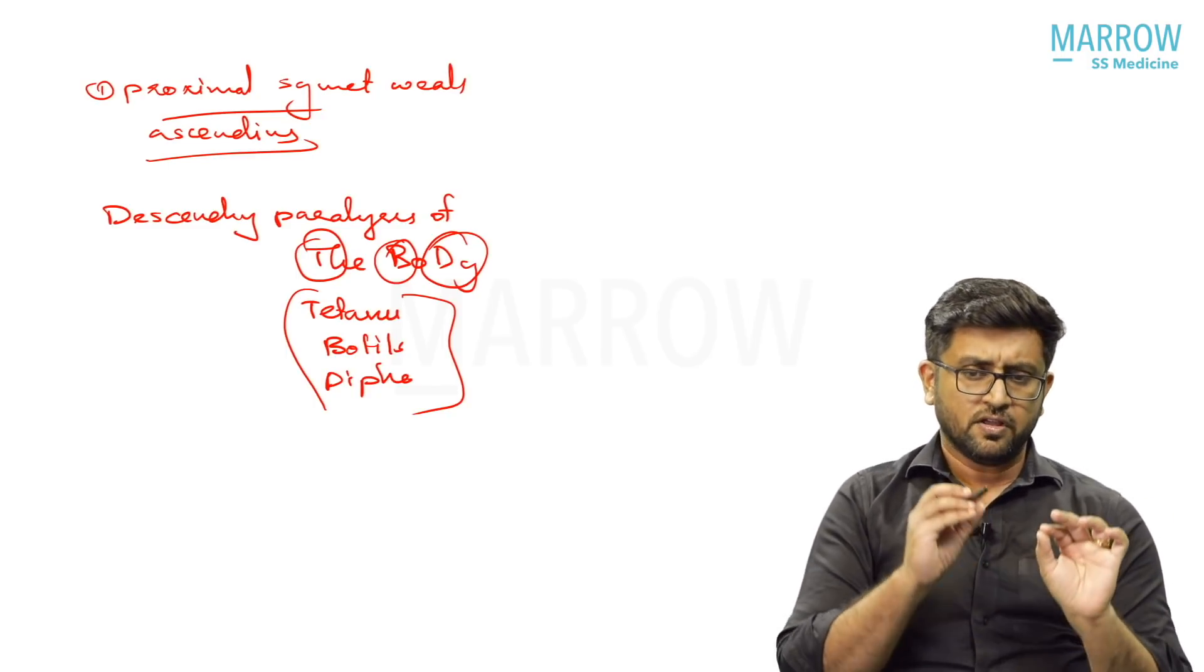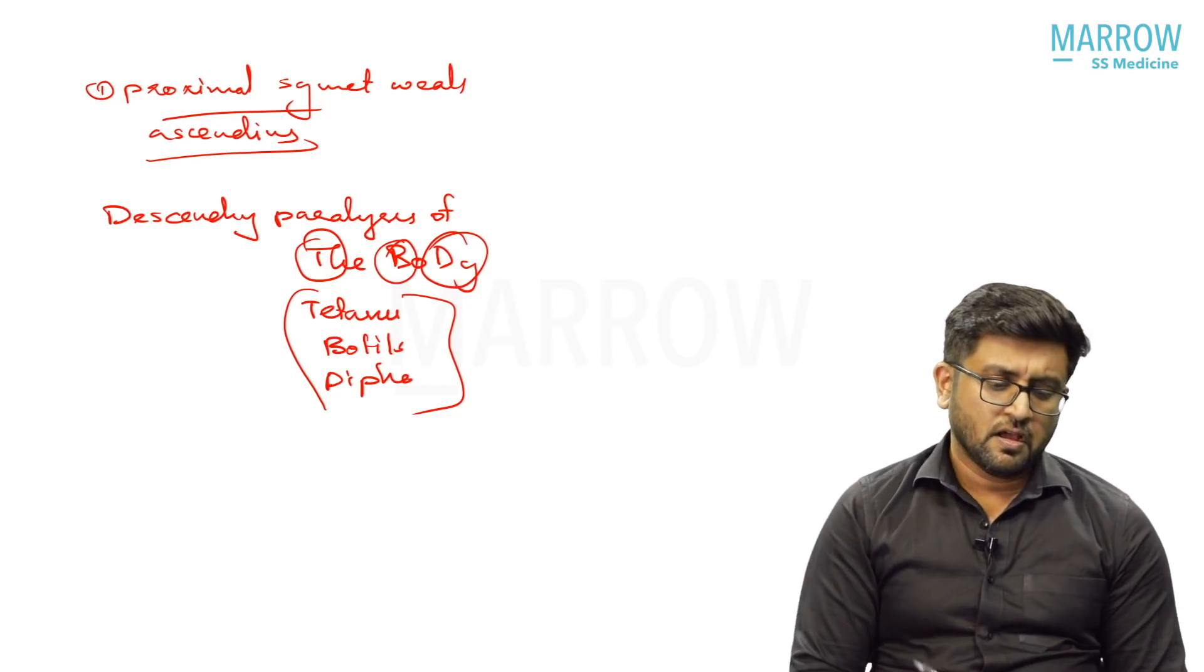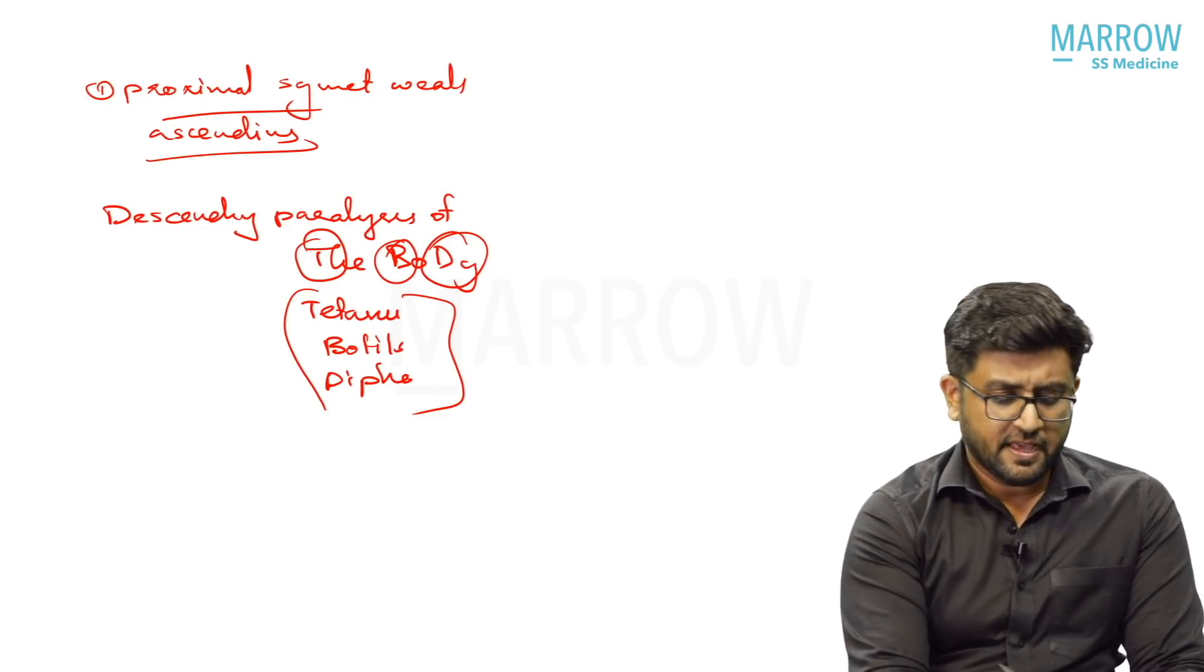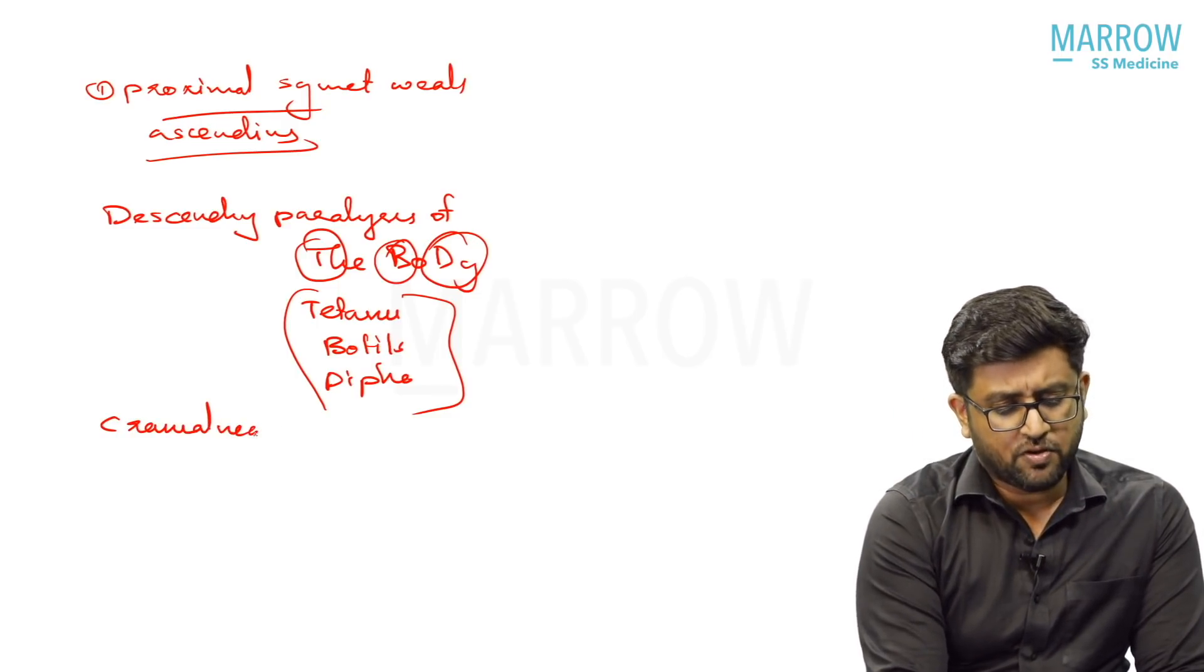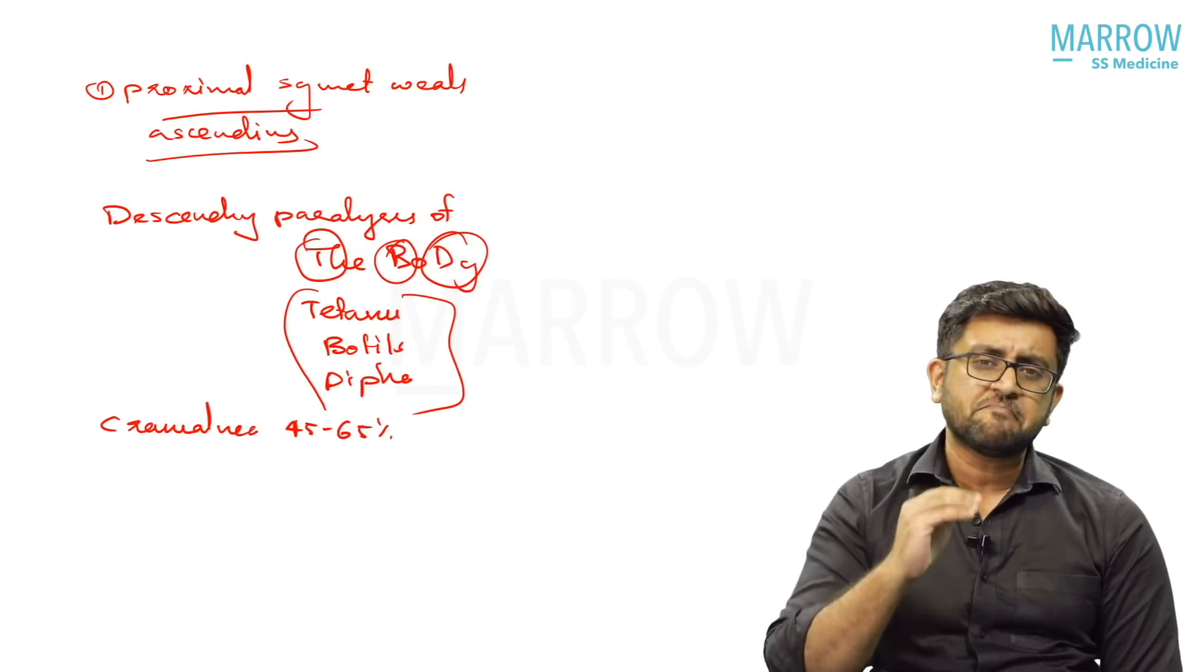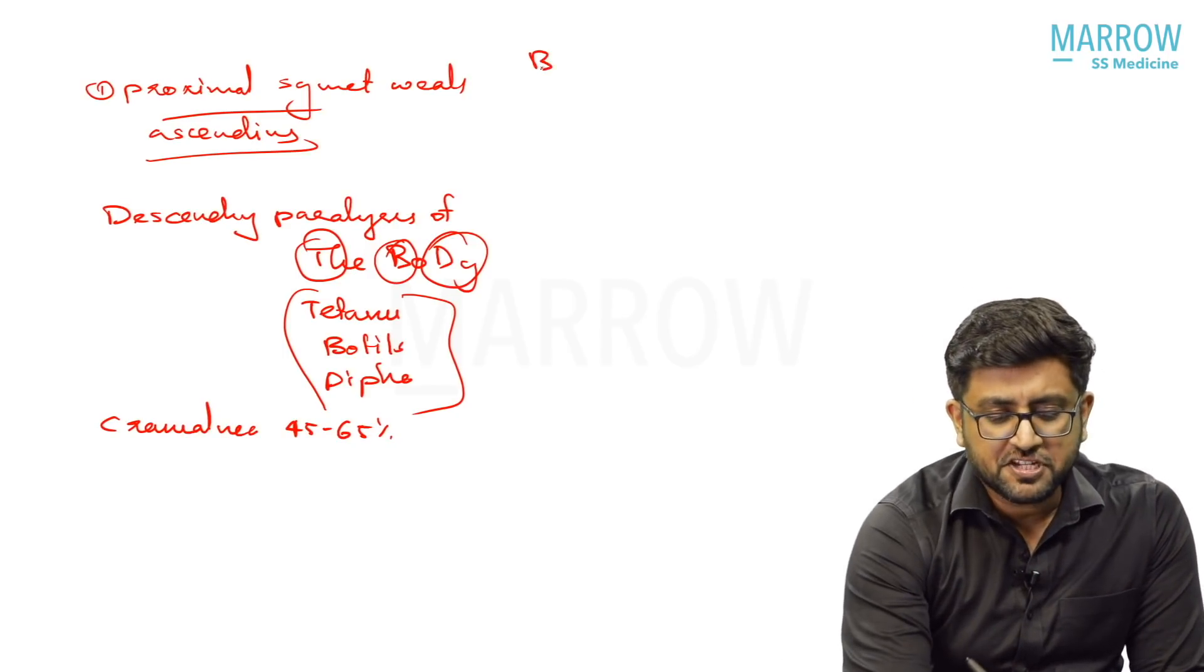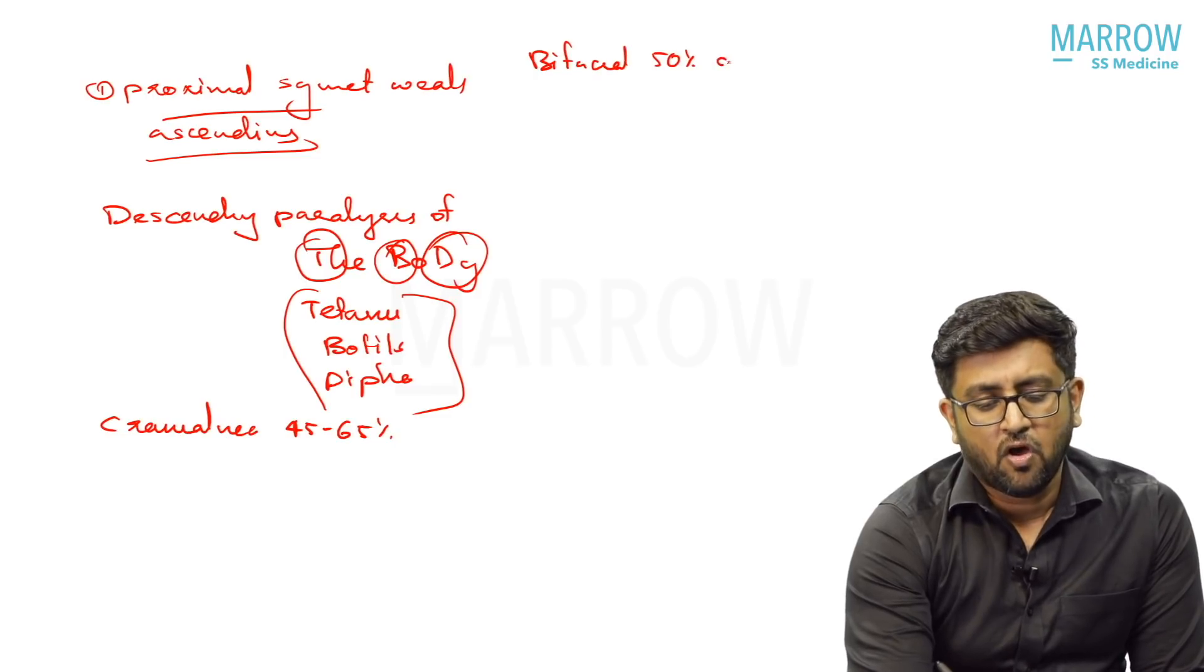AIDP is acute inflammatory demyelinating polyradiculopathy. These are the classical symptoms. It can be associated with other symptoms like cranial nerve symptoms. Cranial nerve symptoms can occur in about 45 to 65 percent of GBS - the most common being facial nerve. Bifacial palsy can present in about 50 percent of GBS.